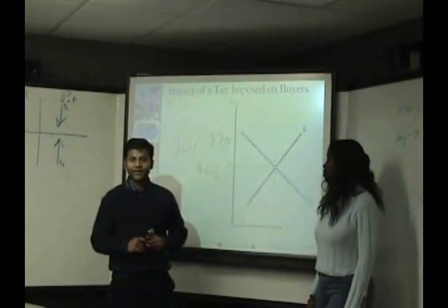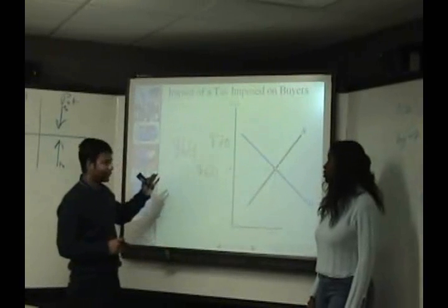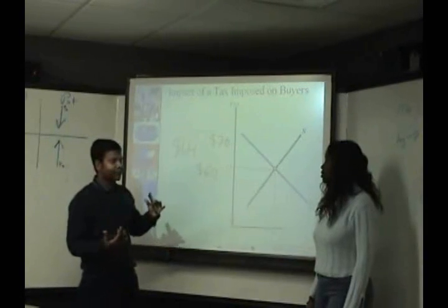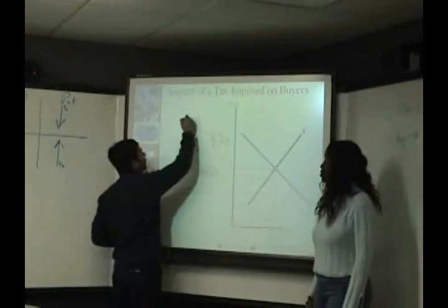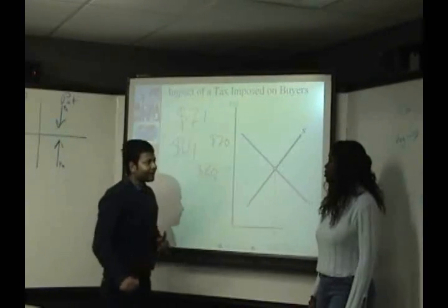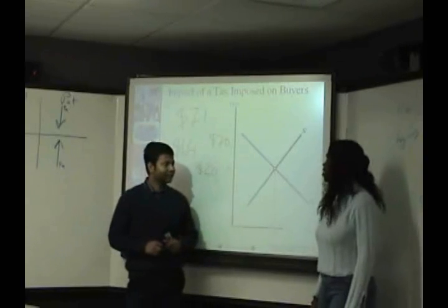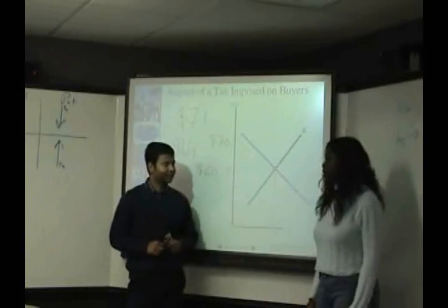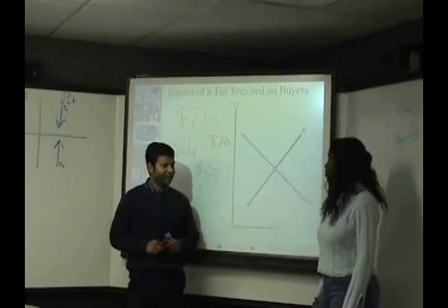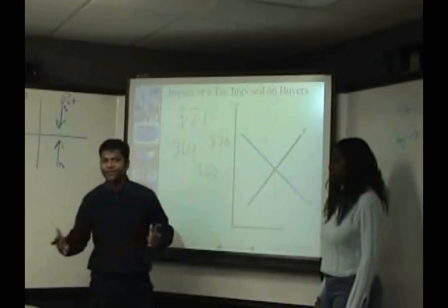Now, suppose what happened if the price after the sales tax was imposed was such that it was seventy-one dollars. Would you still buy the vacuum cleaner? No. Why won't you buy the vacuum cleaner? Because it's higher than the price that I was willing to pay. Okay, so what happens to the consumer surplus now?